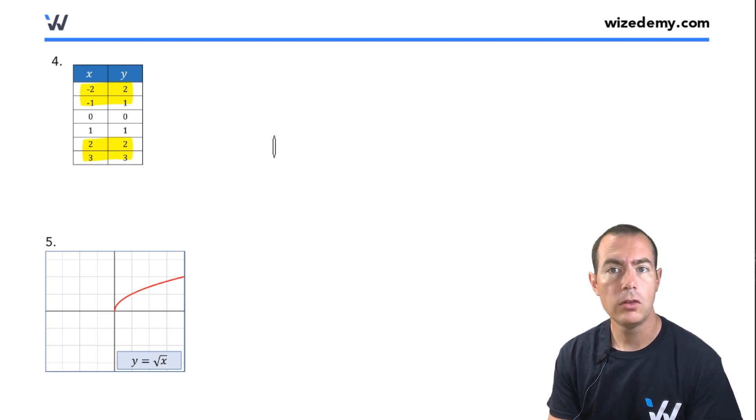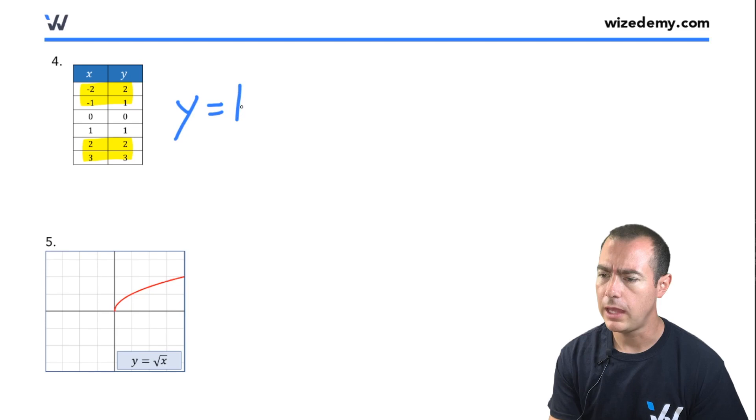Negative 2 goes to positive 2. Negative 1 goes to positive 1. If they're already positive, nothing really is changing. This appears to come from the equation y equals the absolute value of x, which tells us this comes from the absolute value family.